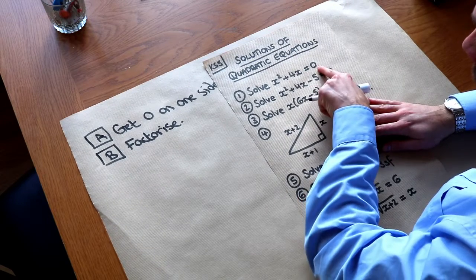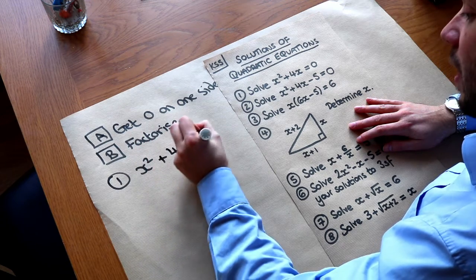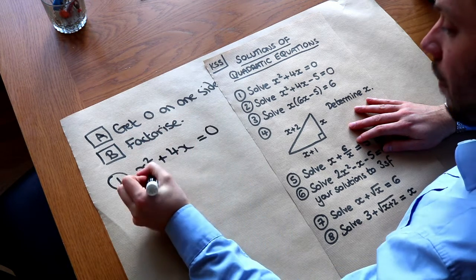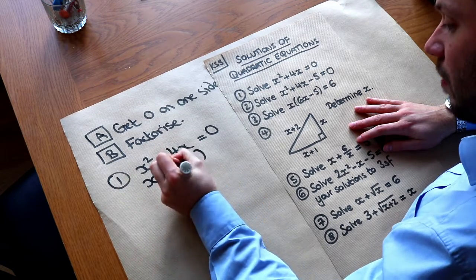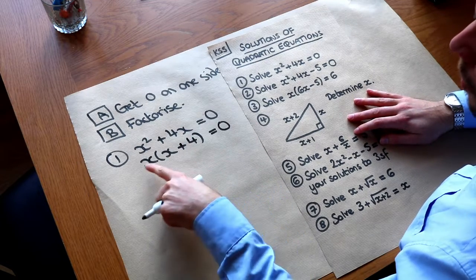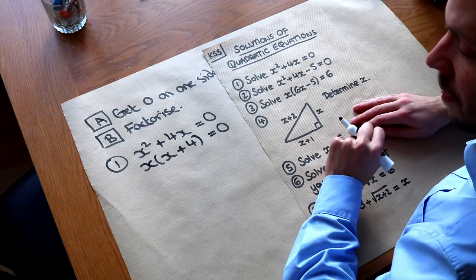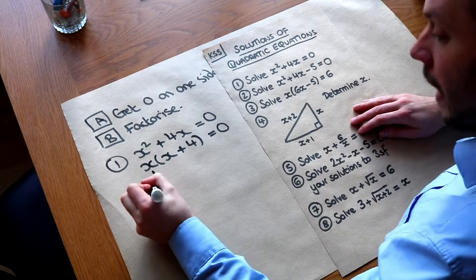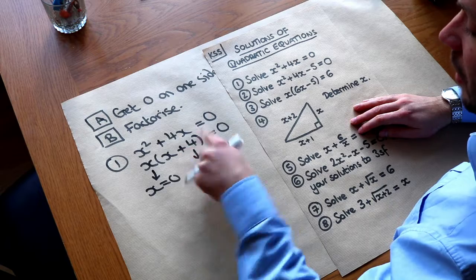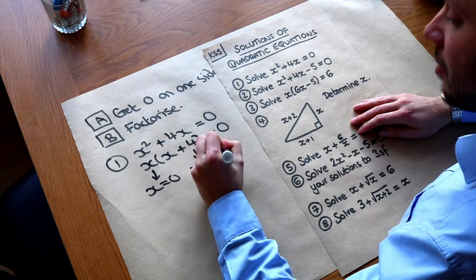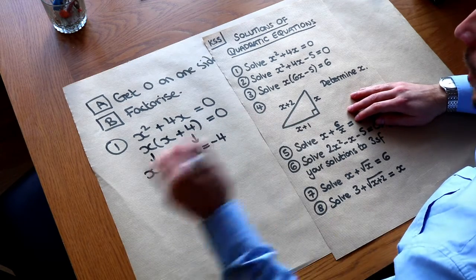Question 1. We've already got zero on one side, so it's just a case of factorising what we have. We can see that we have a common factor of x, so we factorise it out: x times x is x squared, and x times 4 is 4x. We've got a product of two things equal to zero, so at least one of them must be zero. So x is zero, or x plus 4 equals zero, giving x equals minus 4. The quick way is to negate whatever number's there — plus 4 gives a solution of minus 4, and minus 4 would give plus 4.